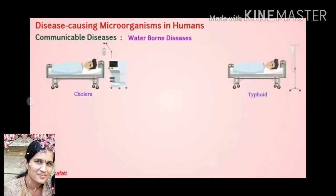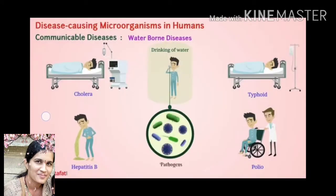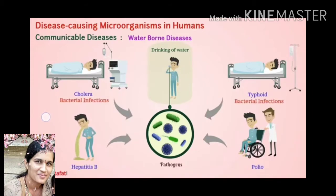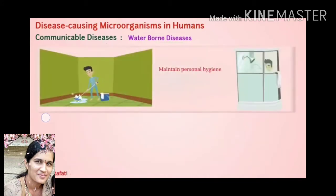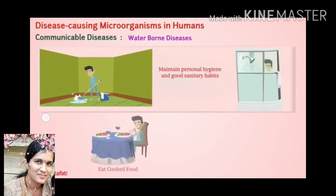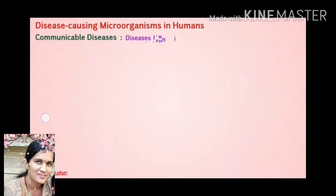Next are waterborne communicable diseases. Cholera, typhoid and hepatitis B are waterborne diseases caused by pathogens such as bacteria and viruses. These diseases cause severe infection in a person. Preventive measures: maintain personal hygiene and good sanitary habits, consume properly cooked food and boiled drinking water, and vaccination should be given to prevent infection.